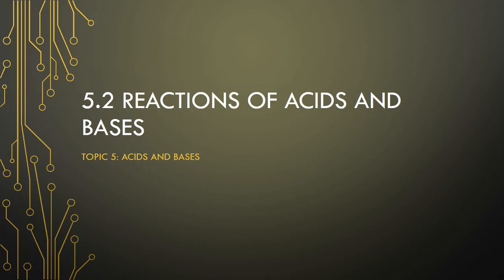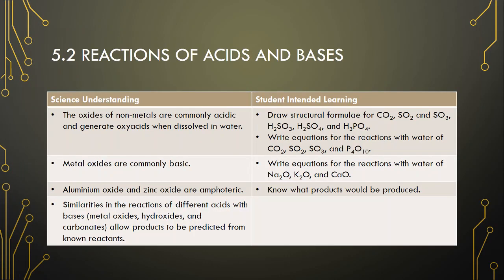Hello everyone, we will continue with 5.2 reactions of acids and bases. In this video we'll be looking at the third row of this table for understanding why aluminium oxides and zinc oxides are amphoteric. By the end of this video, I would like you to be able to know what products would be produced.